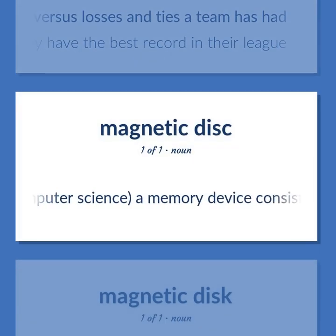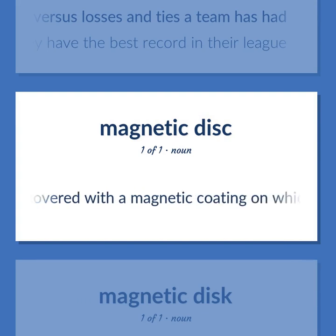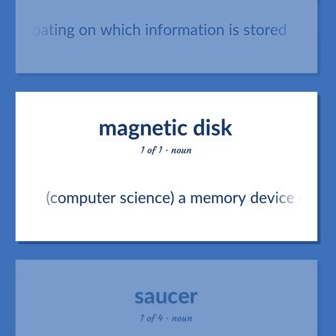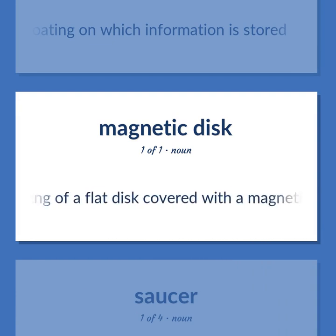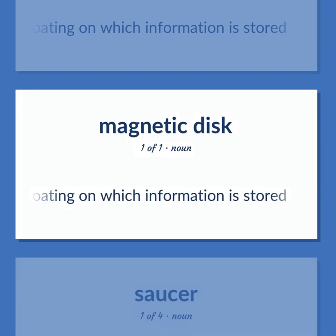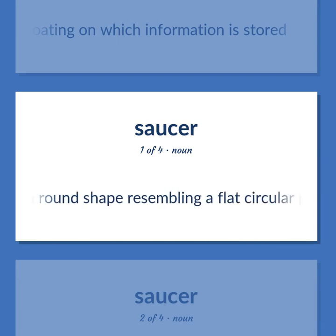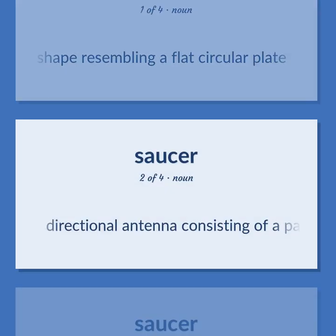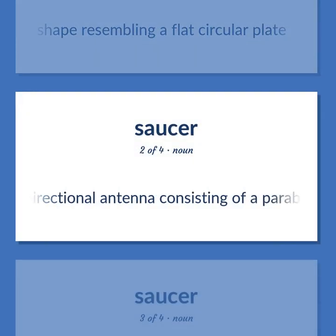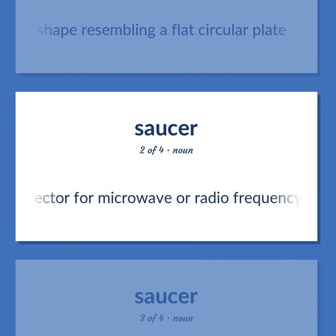Computer Science: a memory device consisting of a flat disc covered with a magnetic coating on which information is stored. Something with a round shape resembling a flat circular plate. Directional antenna consisting of a parabolic reflector for microwave or radio frequency radiation.